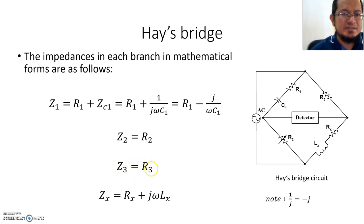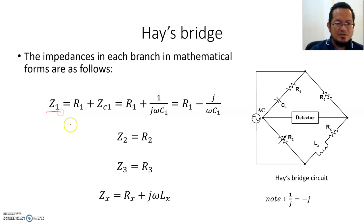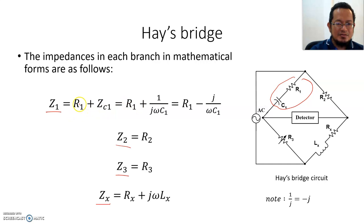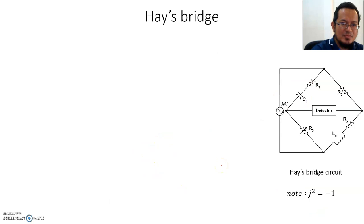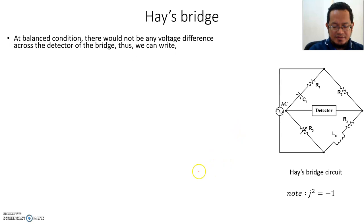Let's take a look at the configuration of Hay's Bridge. You still have the same four-arm branch. The only difference is the different impedance values. For Z1 — the impedance in branch number one — you have R1 and C1 in series. Adding them together: the capacitor is 1 over jωC, and since 1 over j equals minus j, it becomes minus j over ωC1.